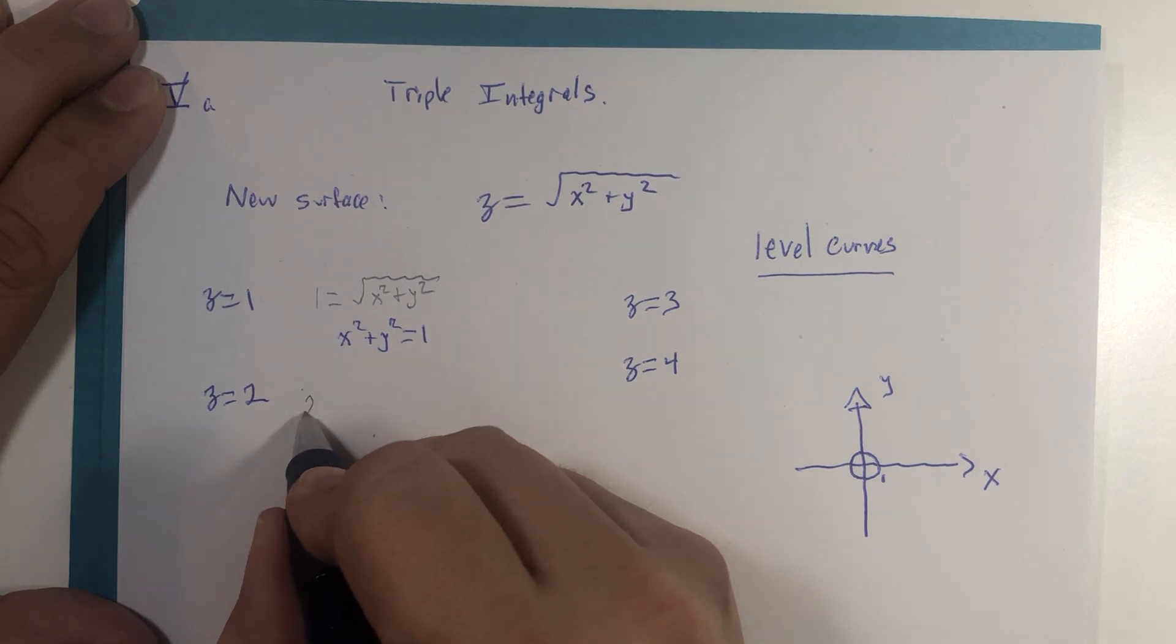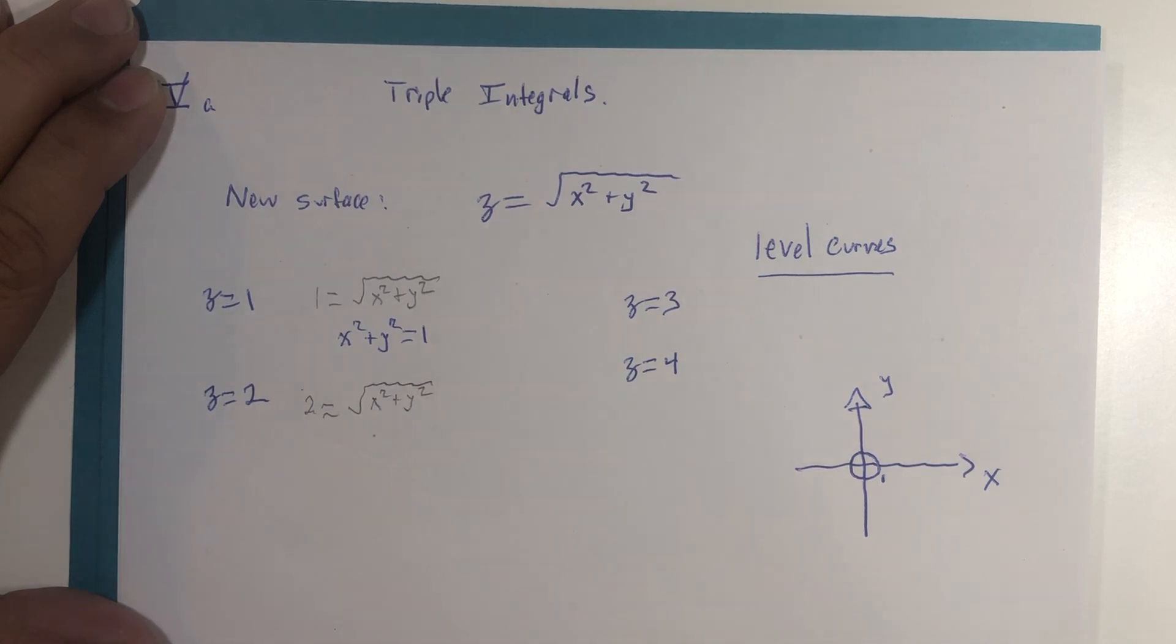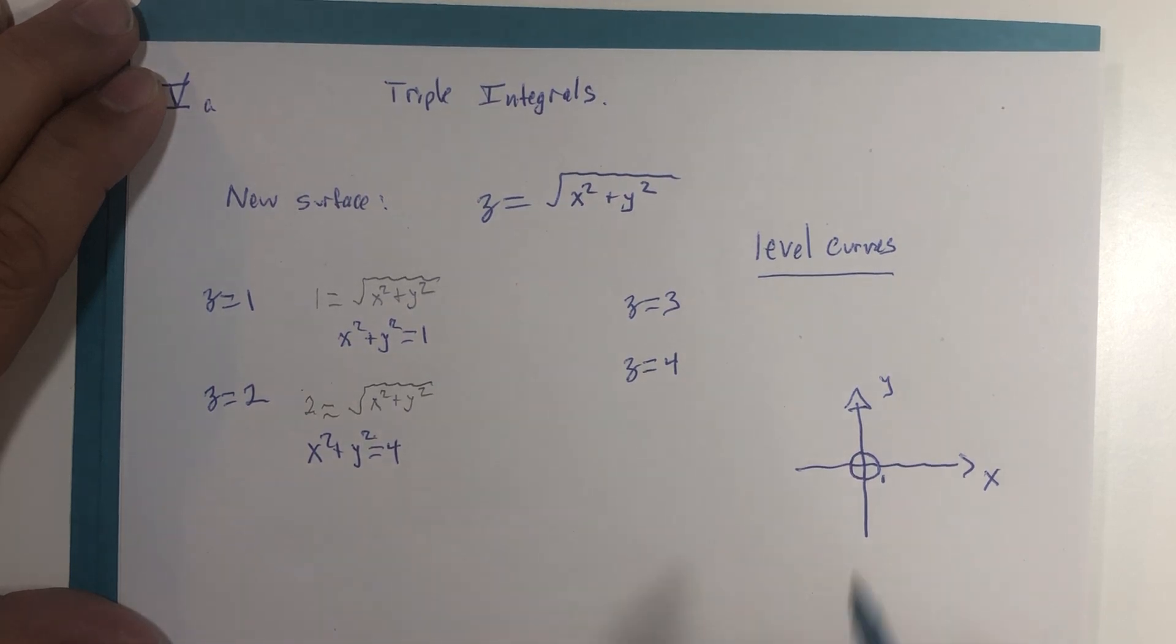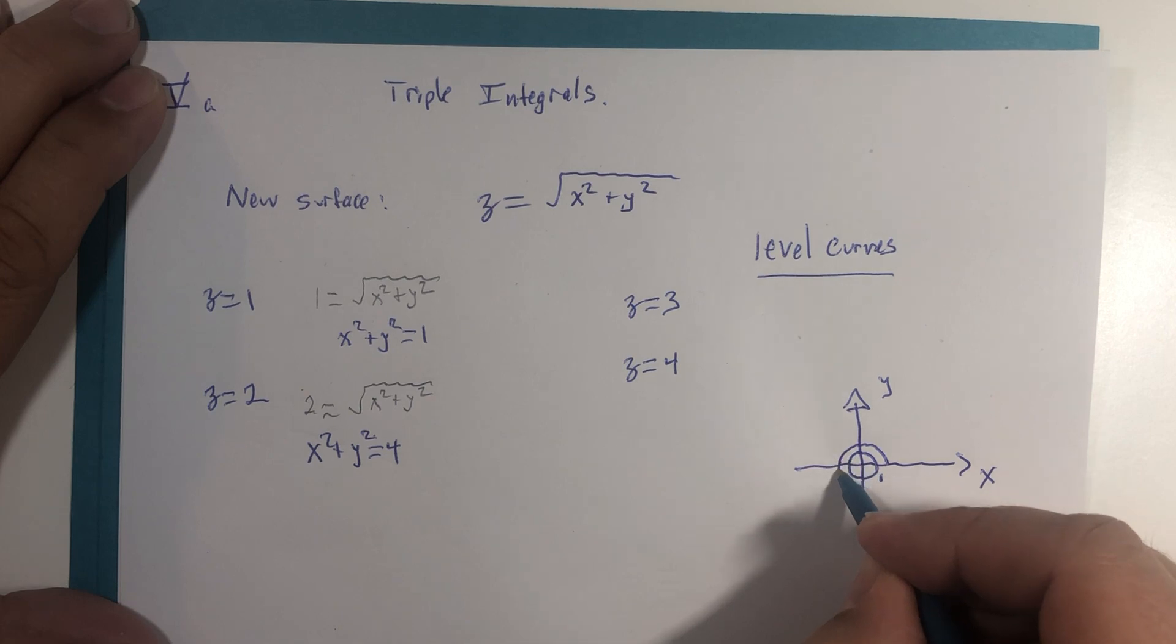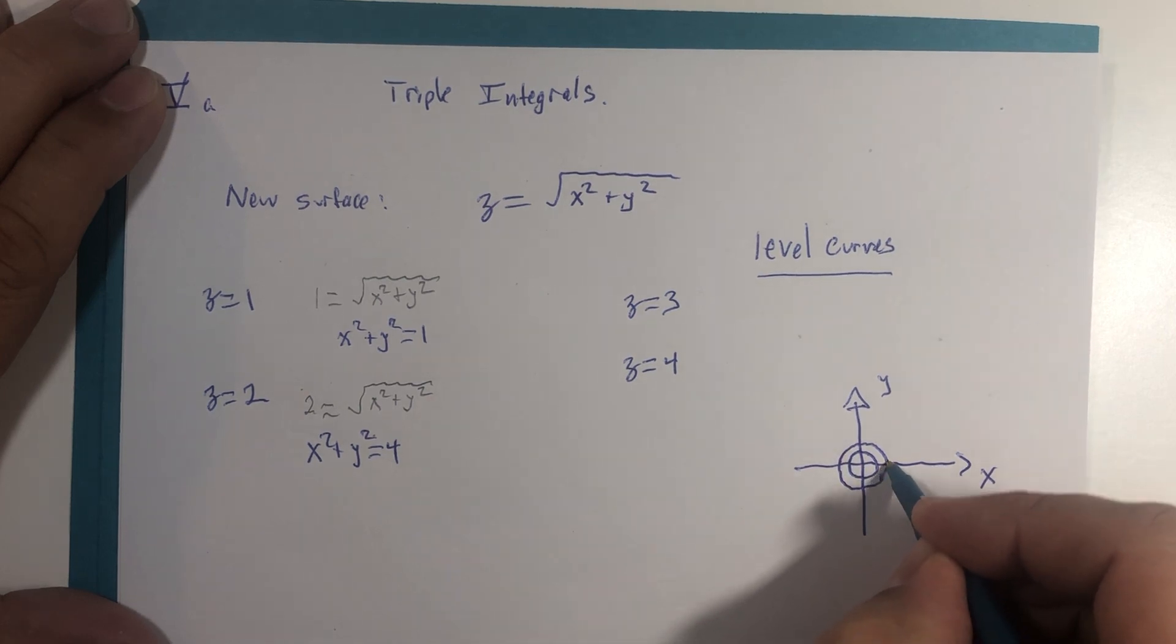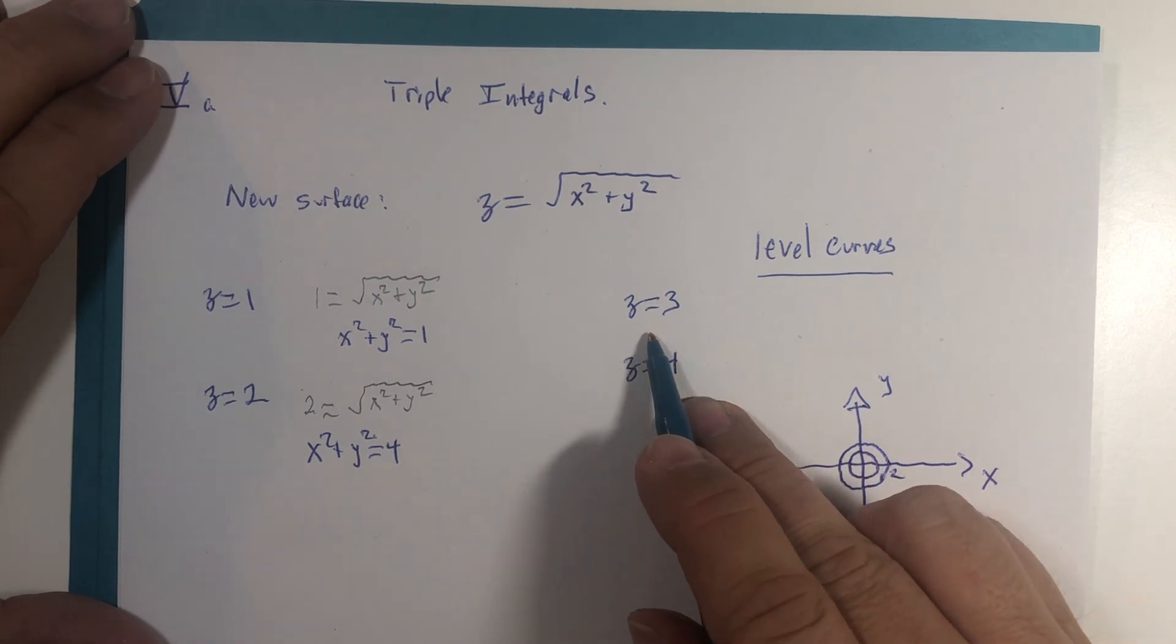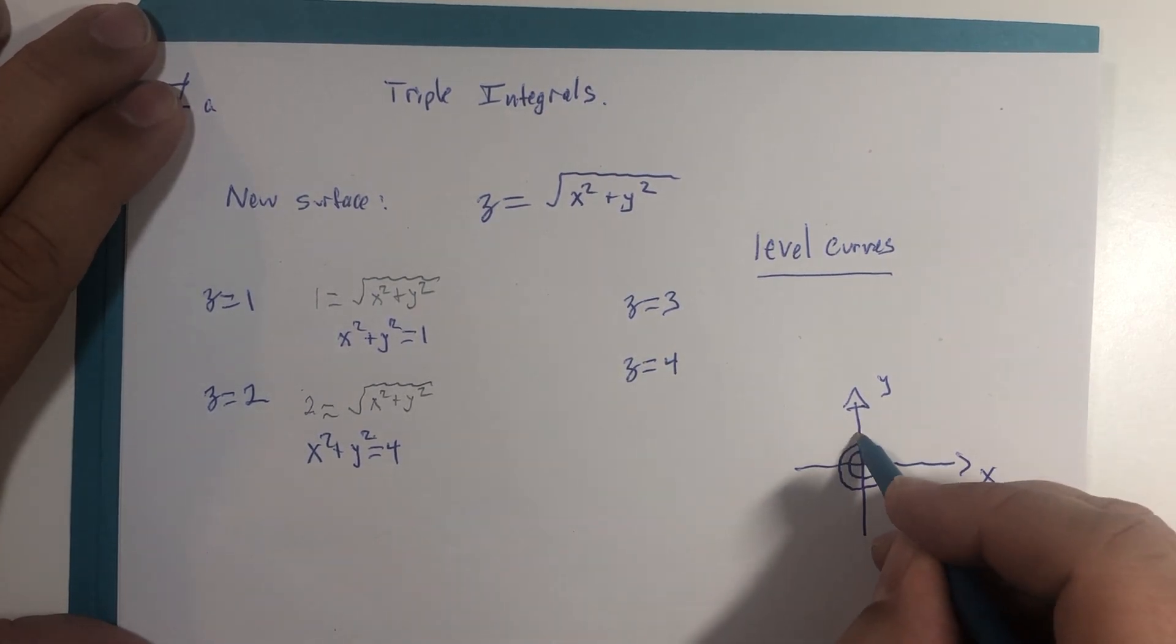If z equals 2, then 2 equals square root of x squared plus y squared. So you get x squared plus y squared equals 4. Well that's a circle of radius 2. And you know what, that's going to be a circle of radius 3, and that's going to be a circle of radius 4.